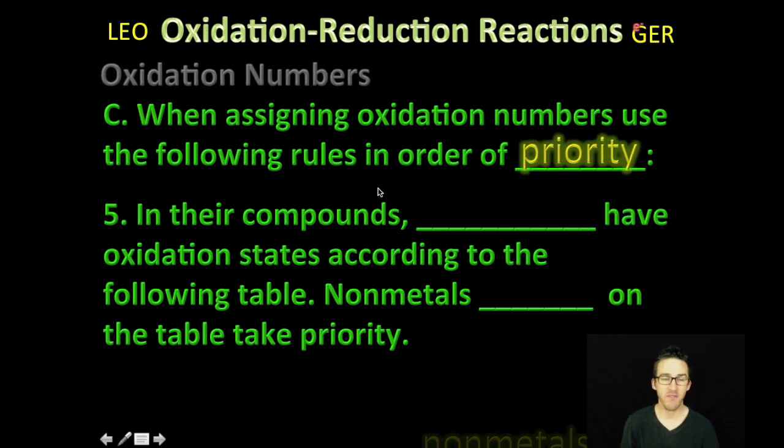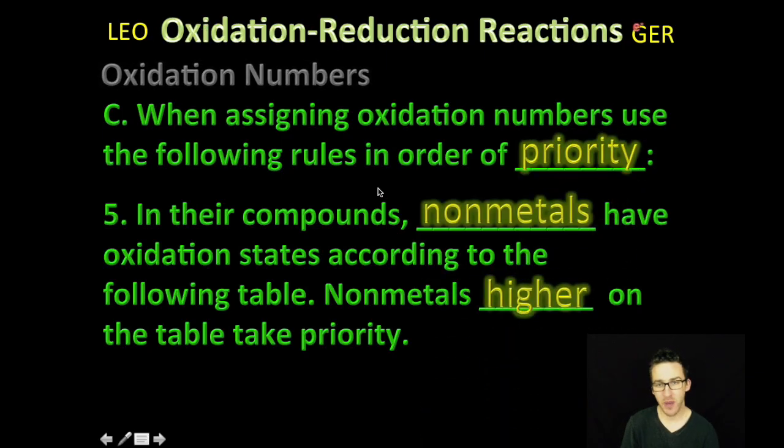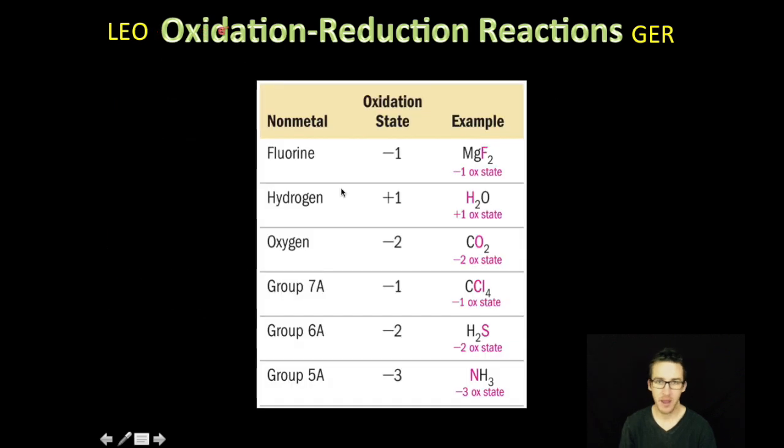Rule number five. When we start working with compounds then, non-metals will have oxidation states according to the following table. And again, non-metals higher on this table that we're about to see will take priority. And you've got this table in your notes, so be sure to reference it. But as you look at this table, notice, oh my goodness, it follows the trend that we just saw on the periodic table. Periodic table. It is important to note that you will assign them in order of this priority that you see, though.